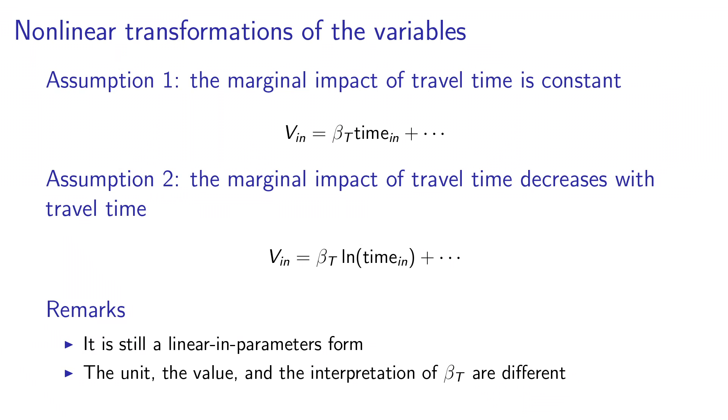So we can now compare the two specifications. In the first one, the assumption is that the marginal impact of travel time is constant. So this is what we did before, where the utility is a linear function of time. And now, we would like to model the second assumption that the marginal impact of travel time decreases with travel time. And this is where we propose the logarithm of time as a variable.